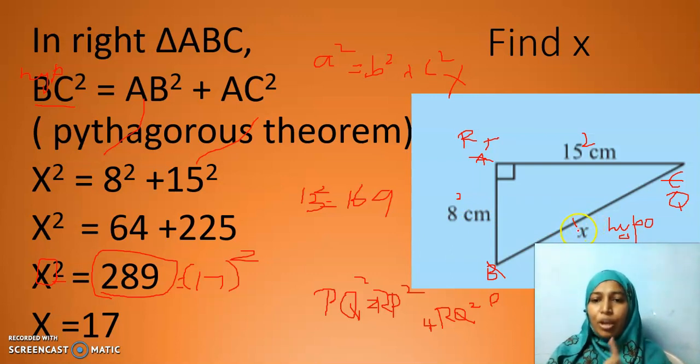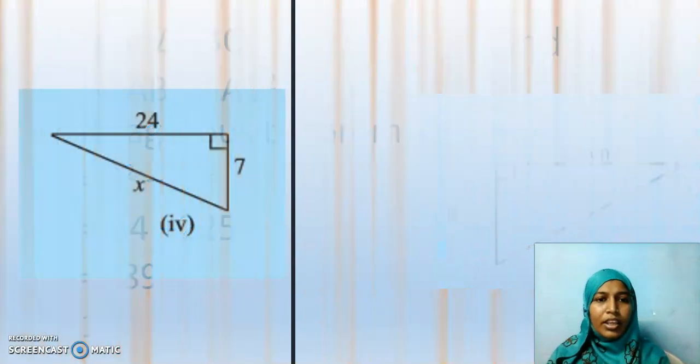When they ask you to find the hypotenuse, you will square the - sorry - sum the square of the other two sides. You will add the square of the other two sides. In turn, if they give you the value of hypotenuse and ask you to find another side, how will you do? Same thing. Here you will have number in BC, you will have number, in AB you will have x. And we know to simplify simple equations, then it is easy. Shall we do one problem?